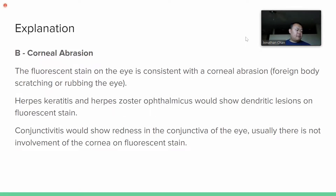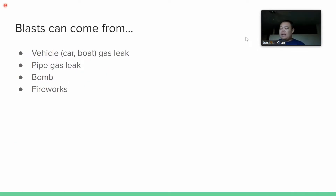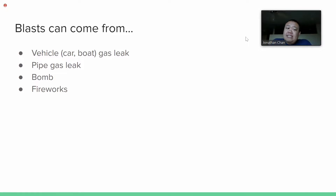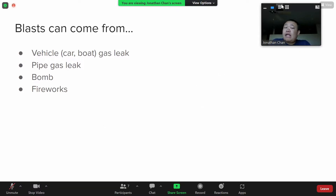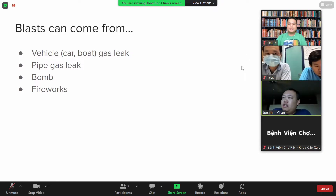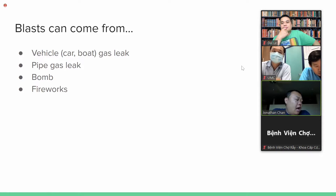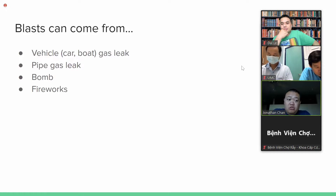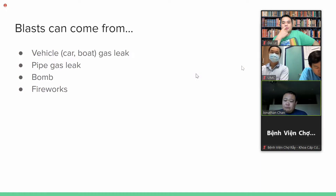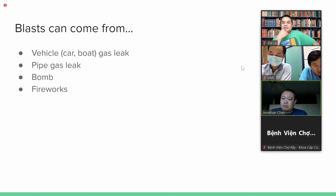We'll talk about these questions a bit more as we go and get more practice. So where do blasts come from? Blasts can come from a gas leak from a car or a boat, a pipe gas leak, unfortunately from a bomb, or from fireworks. There are five types of blast injuries that we'll go over — this sometimes comes up on exams. The primary effect of the blast is when the blast wave passes through a hollow organ. The common organs affected are the eardrum, lungs, and bowel — all organs with air and thin membranes — so these are easy for the blast wave to break through.